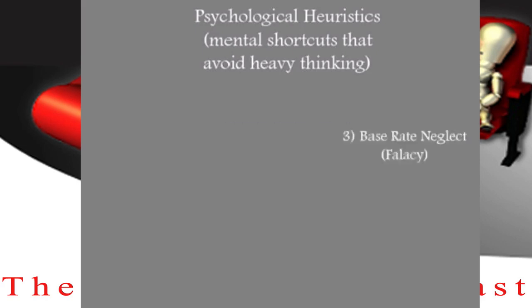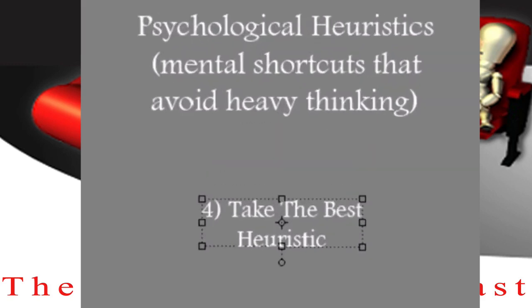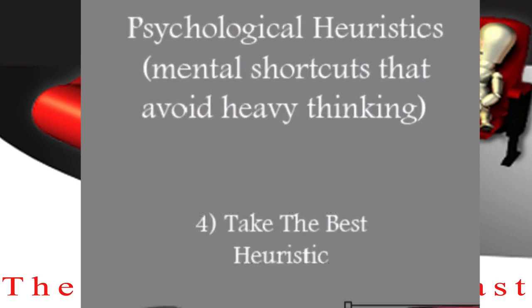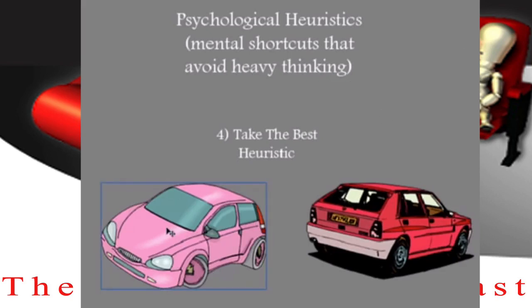Next one — number four — is the take the best heuristic. This is where you're trying to make a decision between two cars, and you just ask: which one gets the better gas mileage? Someone says this pink one does, and you go, 'All right, I'll take that one.' You are making a decision based upon one piece of information and not going any further than that, not considering any other information.